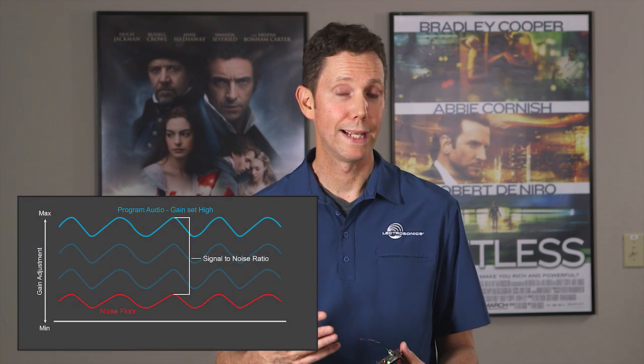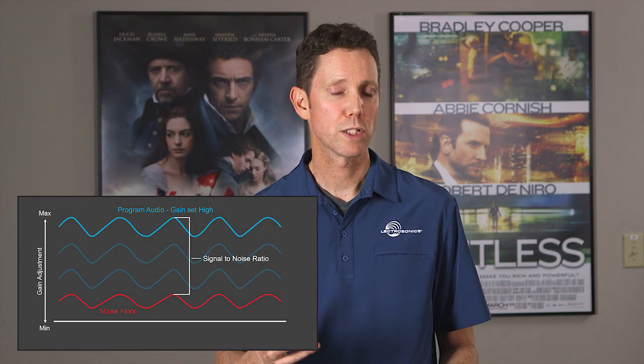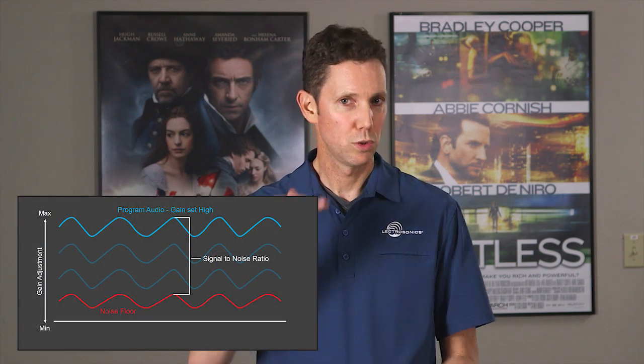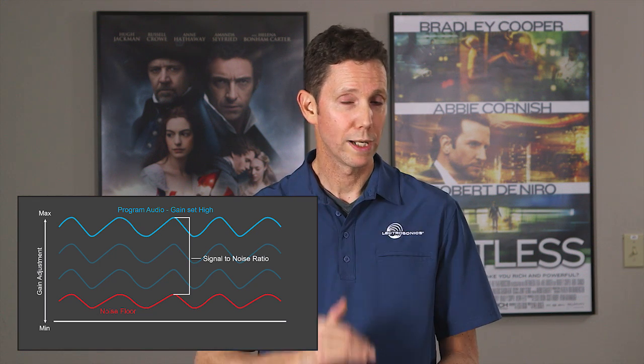Usually you would hear that noise when the microphone system is at the edge of its range. So how do we compensate for that? You want to turn up your audio gain enough on the transmitter so that you get a good signal-to-noise ratio — desired signal to your noise floor. The way that you know you're doing that is to bump up against the limiters in the transmitter.